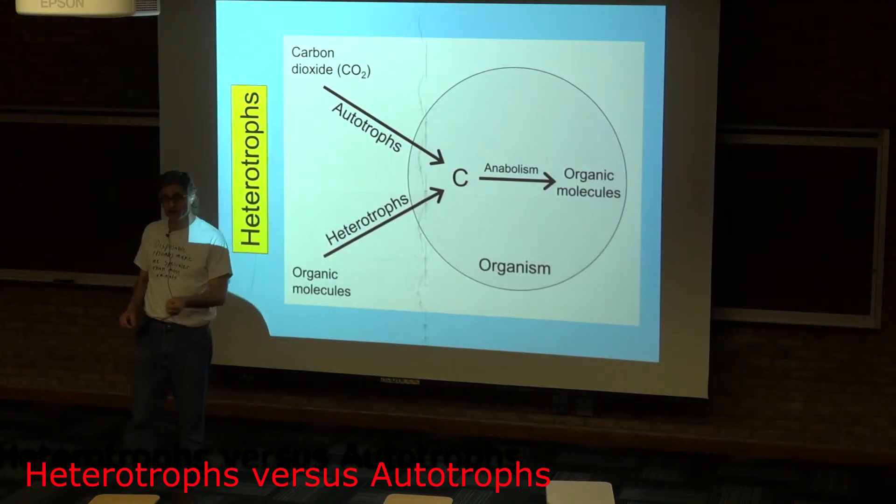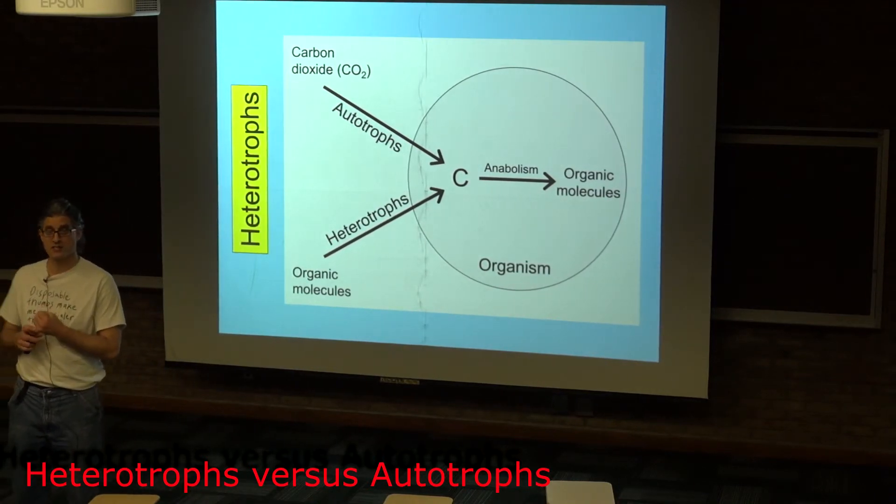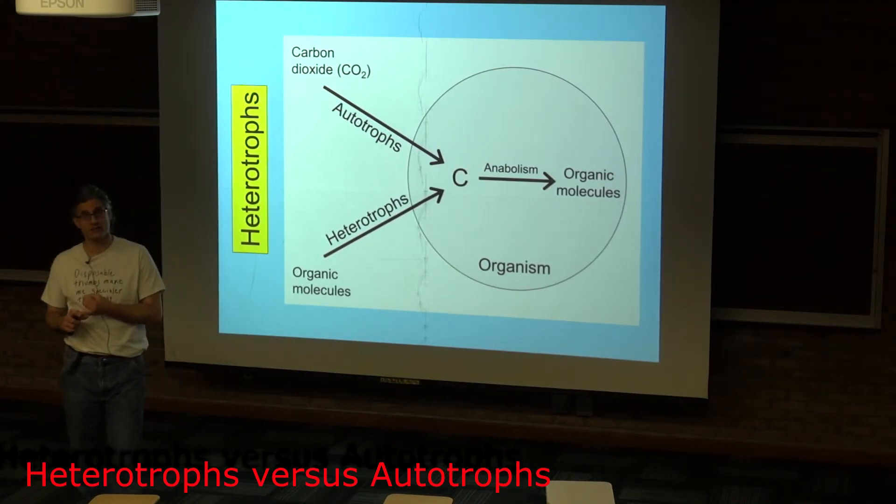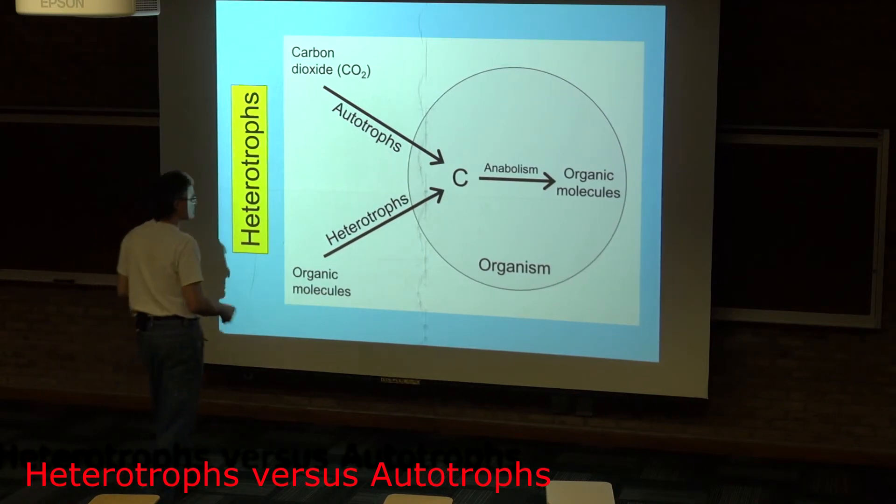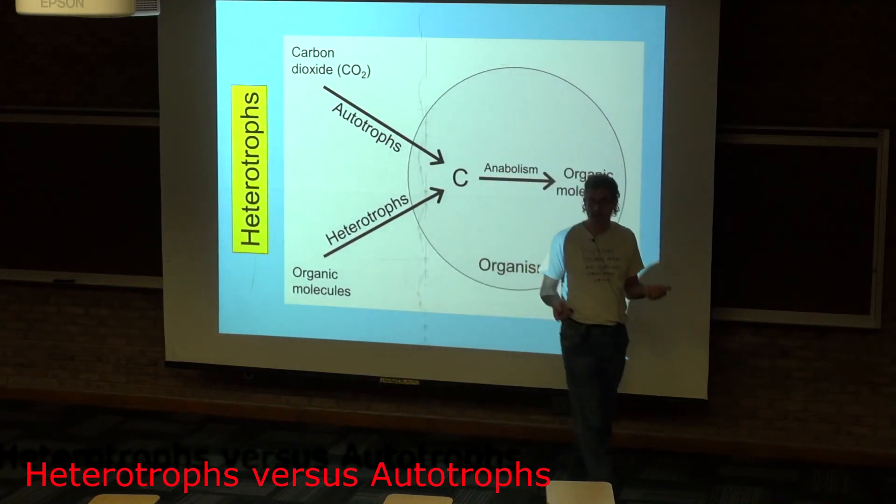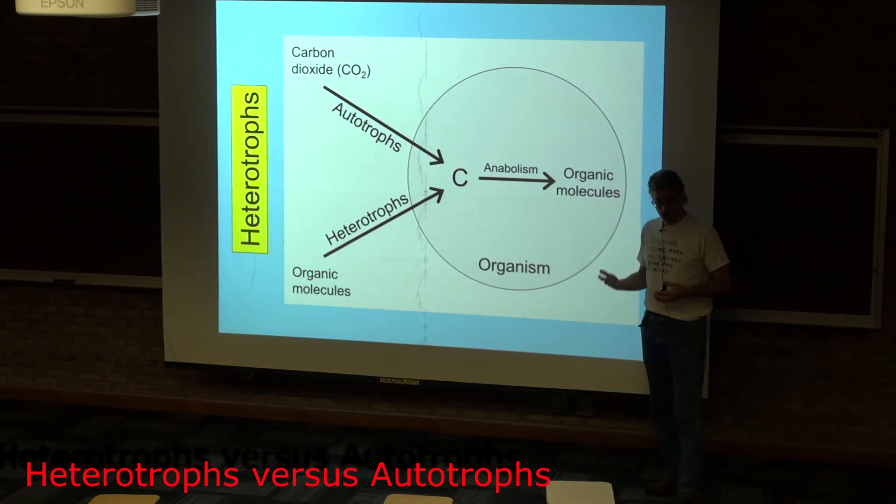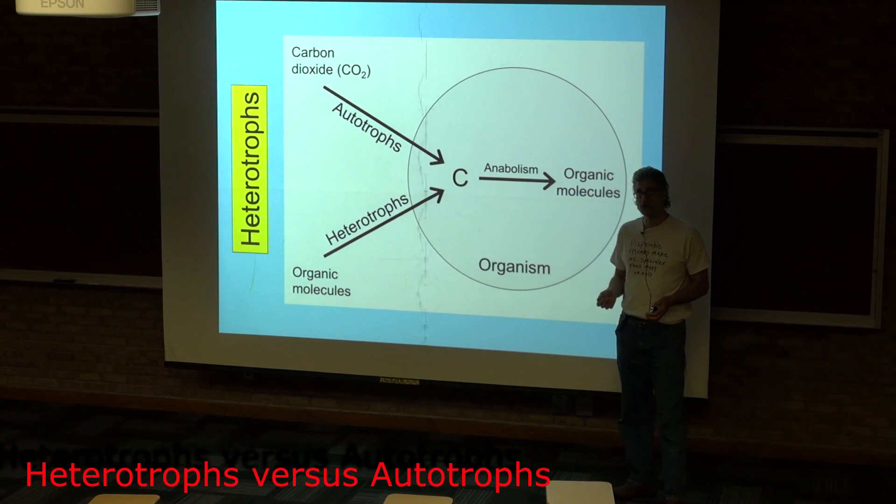Now they're consuming those molecules either because they've been given those molecules, that would be a mutualistic interaction, because they're taking those molecules, that would be for example a predatory interaction, or instead because they are utilizing those molecules when those molecules are no longer needed by whatever organism previously owned or consisted of those molecules. And these would be for example the decomposers.